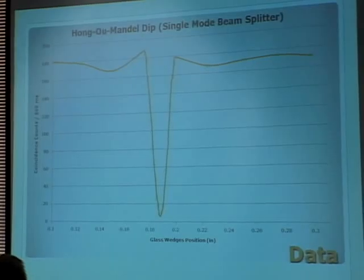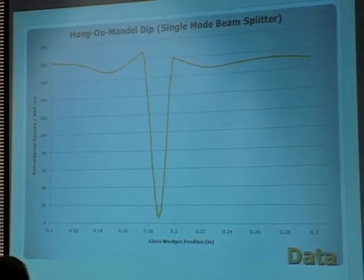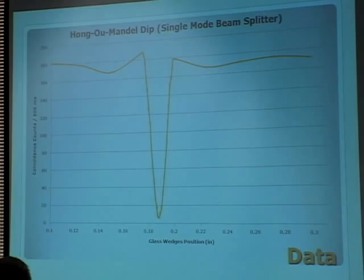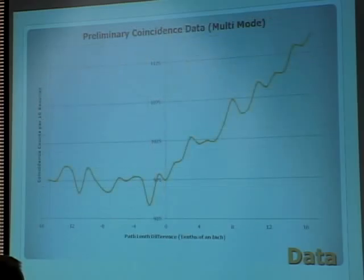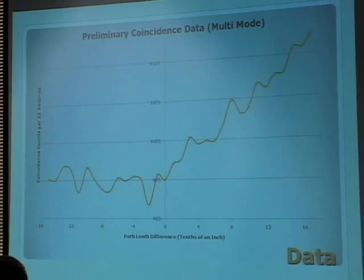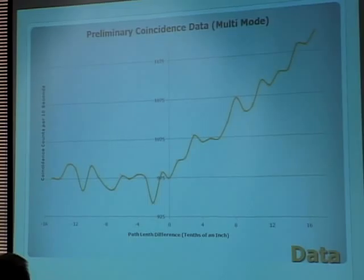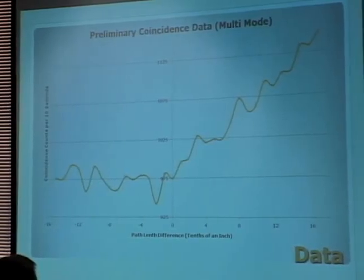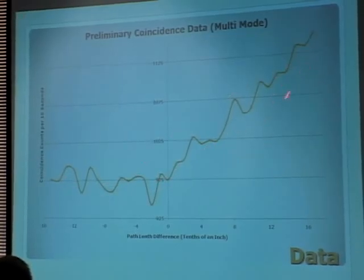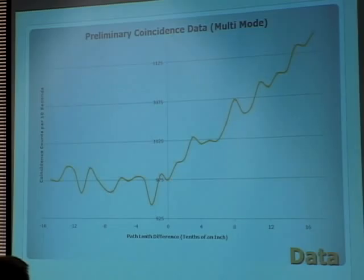This was done using the single-mode beam splitter. The phenomenon we observed is known as the Hong-Ou-Mandel dip, referring to this shape in the data. What we tried to do next was look at a multimode beam splitter — we took the single-mode beam splitter out and inserted a multimode beam splitter. The data is nothing like what we previously obtained; these results are completely different. We have to step back and wonder why. Could we simply be really zoomed in on that dip, or does this effect simply not occur with multimode beam splitters?